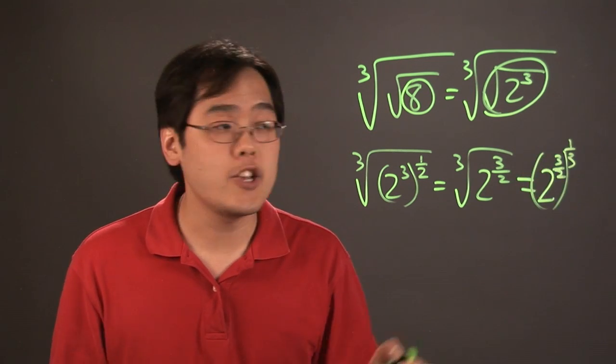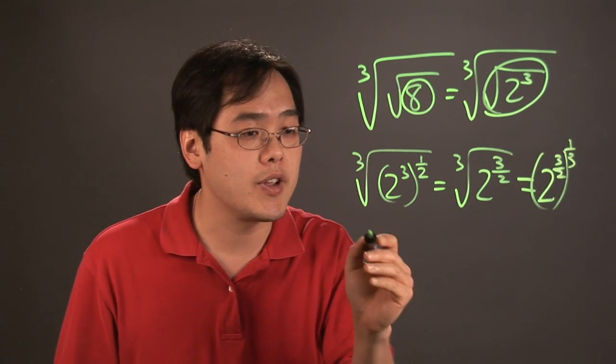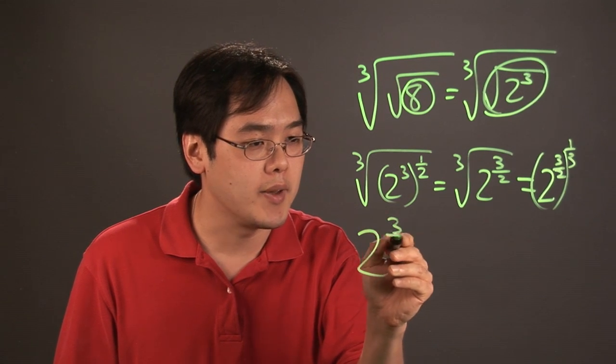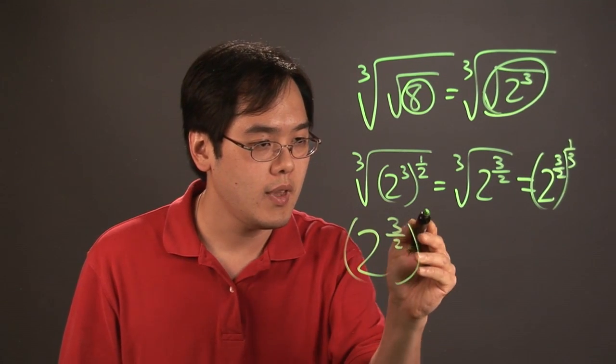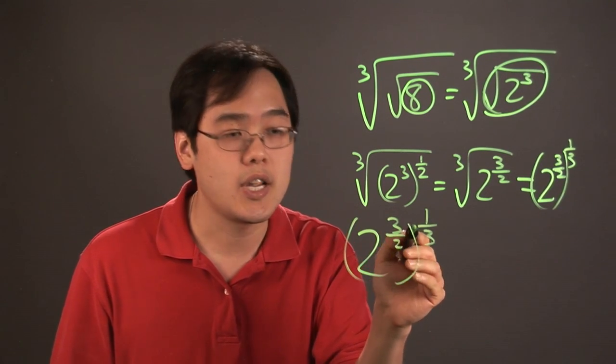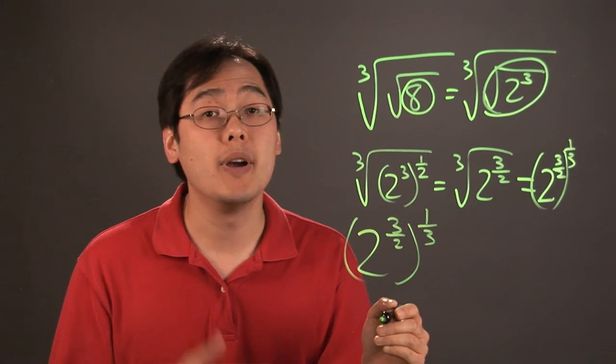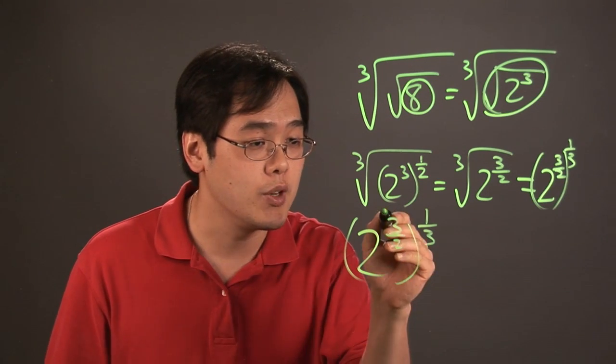Now as you might imagine if you have exponents next to each other you can actually multiply them, so rewriting them you have 2 to the three halves times one-third in the exponent form. But using the powers of cancellation you know the threes cancel.